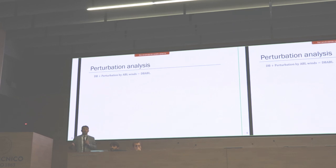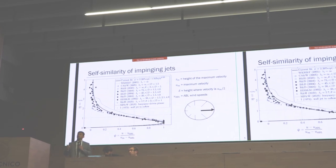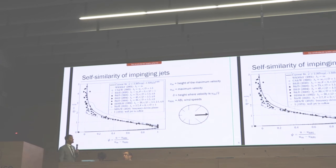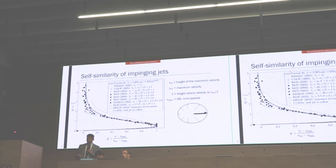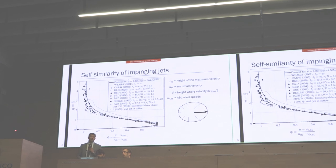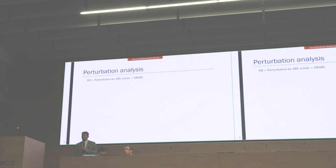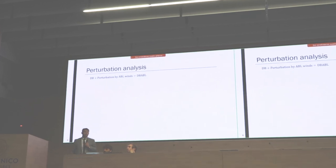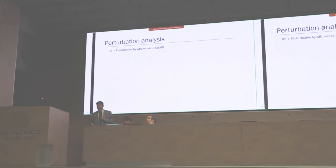When we found normalization functions that collapse profiles, and you can see the empirical function in the legend that fits all these profiles, we can subject this empirical function to perturbation analysis. Perturbation analysis in our case says that downburst is perturbed by ABL winds to produce DBABL outflow.